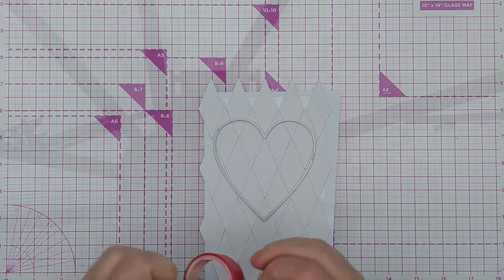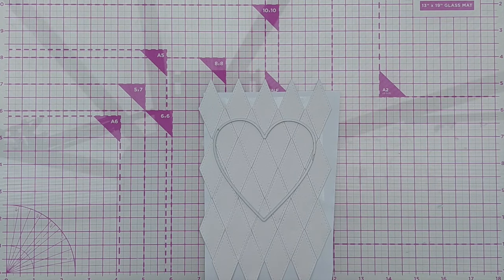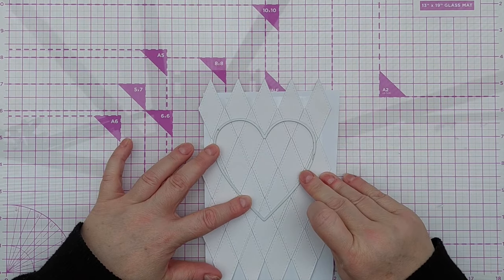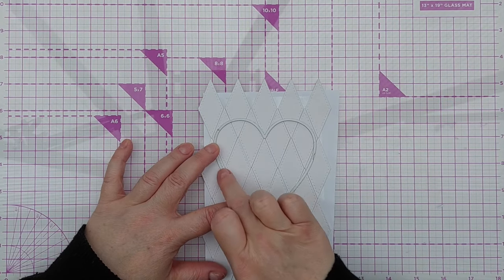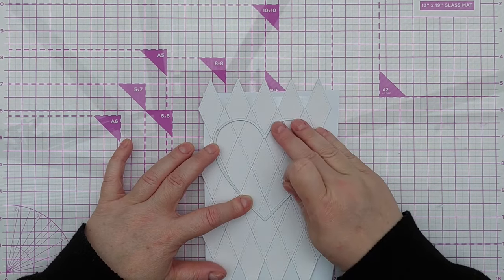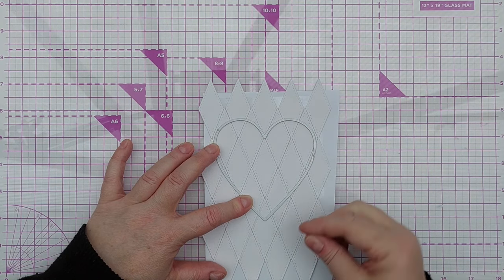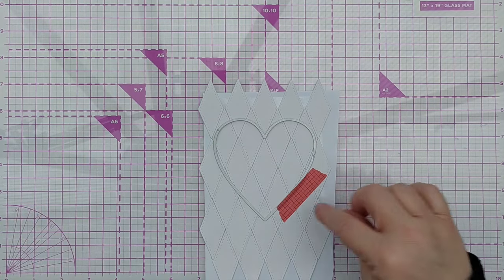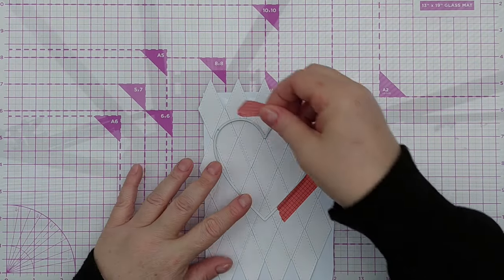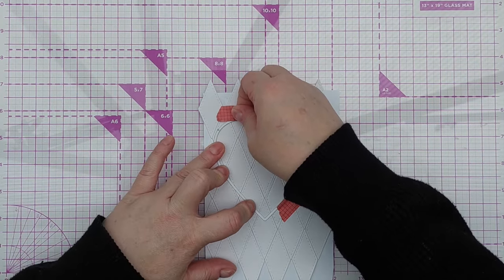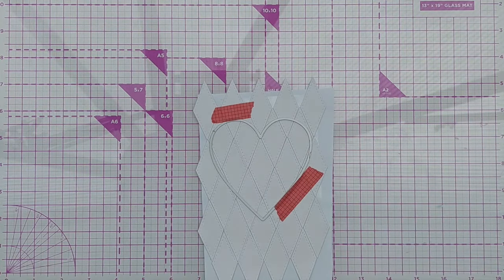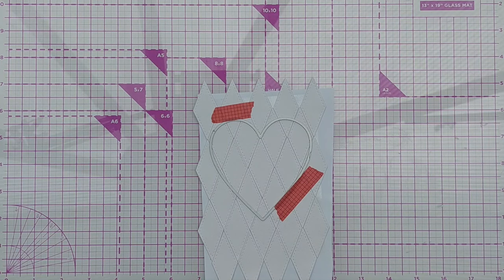So now I'm going to tape that down with washi tape. I'm going to tape it to the outside to reduce any risk of tearing the bit that I want, the heart. And then we'll run that through the die cutting machine. So I'm going to pop this on my grip mat.